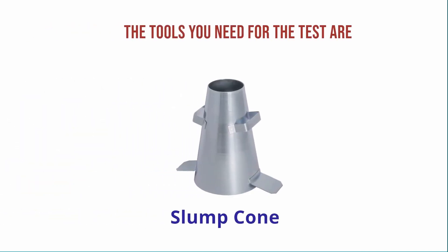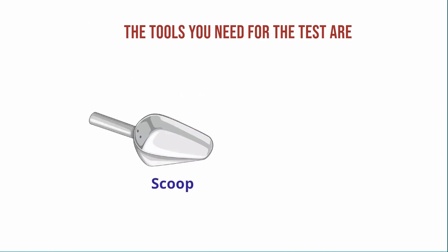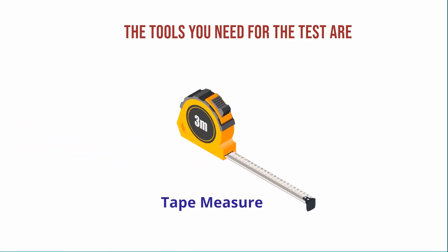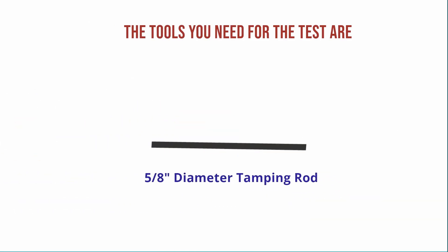The tools you need for the test are a slump cone, a flat non-absorbent surface, a scoop, a tape measure, and a 5/8 diameter tamping rod with hemispherical ends.